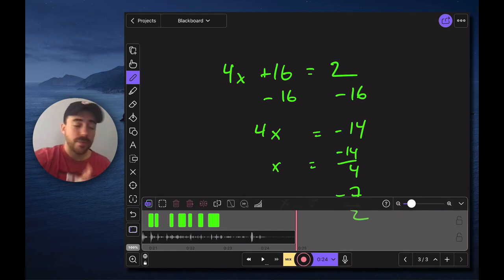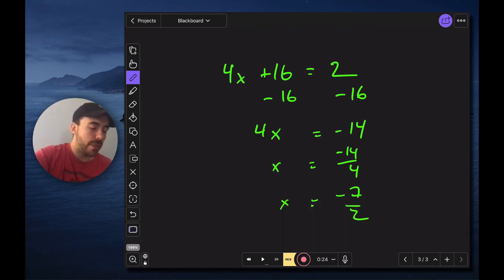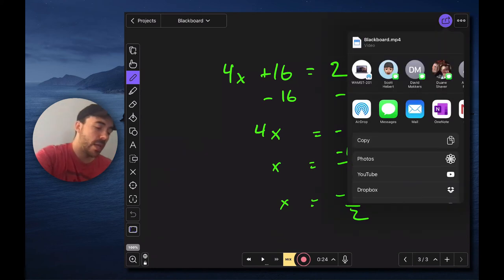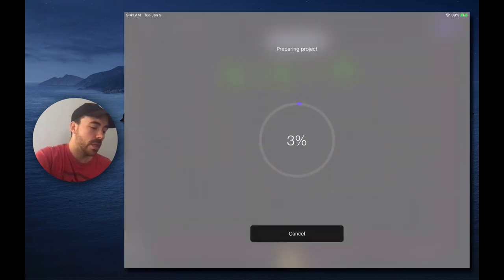All right so once you've completed all of this you can export this as a video for your teachers to view. So in the top right hand corner I'm going to hit the share button. It's that blue one up there. So I'll choose video. And then it's going to ask me for a place to save it. I'm just going to save it to my photos here. And you'll see that my video is now processing. Once it gets all the way to 100 percent you'll now have that video in your photos library.